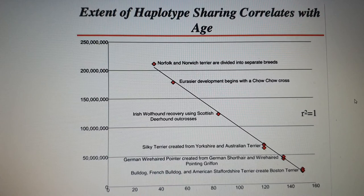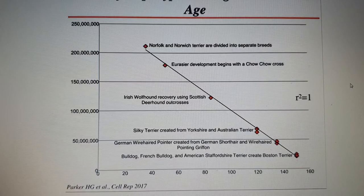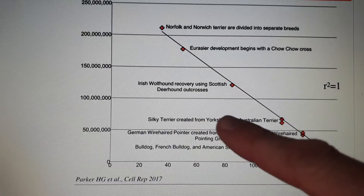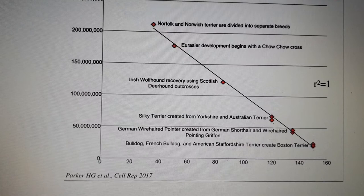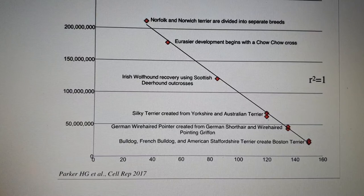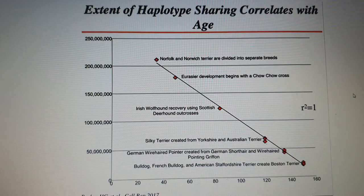There is a drawback to outcrossing: the genetic diversity increases, but the breeds resemble each other more, so future outcrossing within the same breed becomes less beneficial. Other noted breed histories: the Silky Terrier created from Yorkshire and Australian Terriers; the German Wirehaired Pointer developed from the Wirehaired Pointing Griffon and German Shorthaired Pointer; and the Boston Terrier created from the American Pit Bull Terrier of that era, resulting in a show breed later called American Staffordshire Terrier.